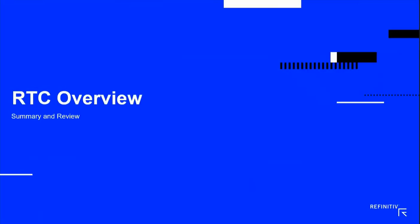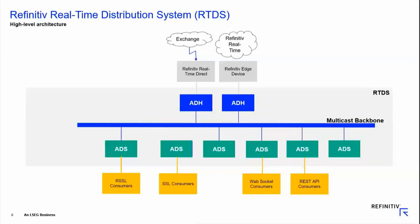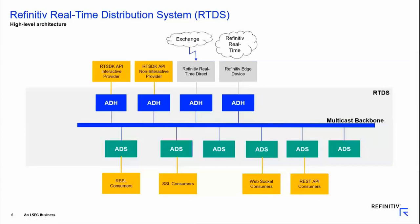Before we get into the RTC overview, the next slide shows a general RTDS deployment. We have a multicast backbone where, through an ADH, we bring in different sources of information — whether from Refinitiv through an edge device, direct feeds, in-house applications publishing data using our RTSDK APIs, or third-party vendors. It is interest-driven on the backbone. The ADHs subscribe based on client interest and pass the information to consuming applications, whether they are RSSL-based or SSL WebSocket. We also have REST API support, and all entitlement is done via DAX. Both the ADH and the ADS can run the DAX daemons. That's the typical flow of data in a distribution system.